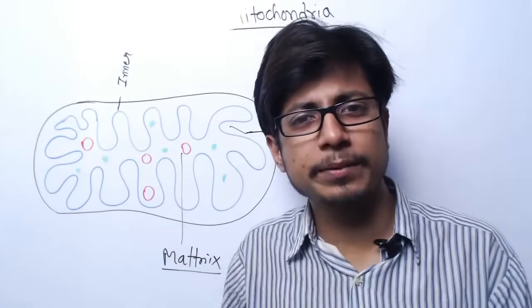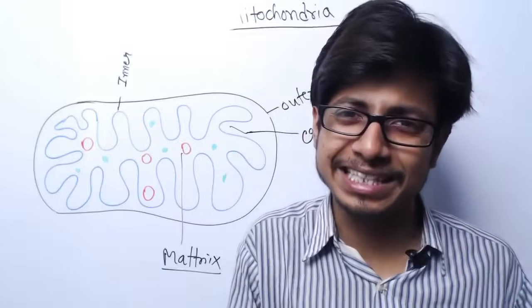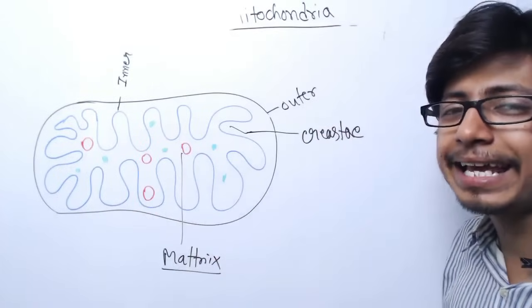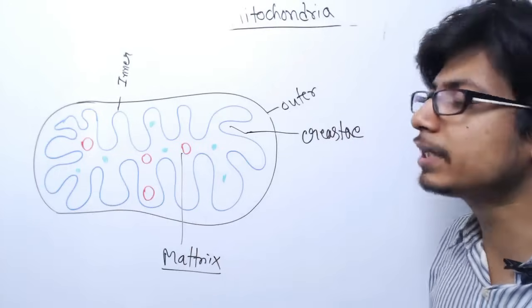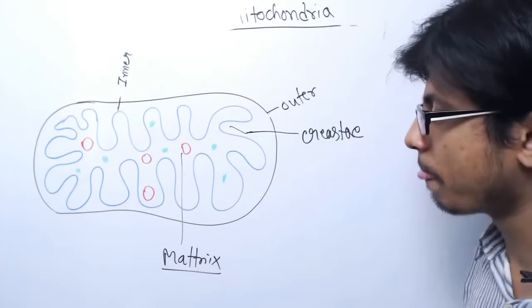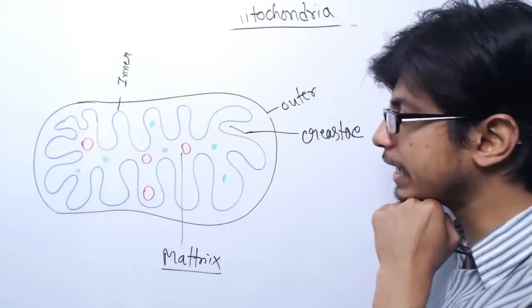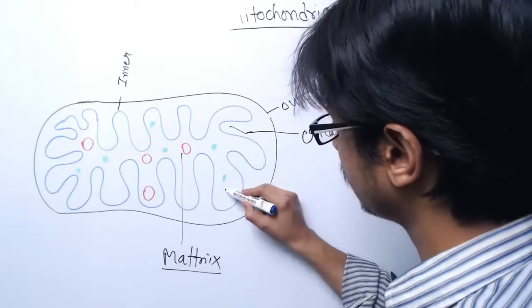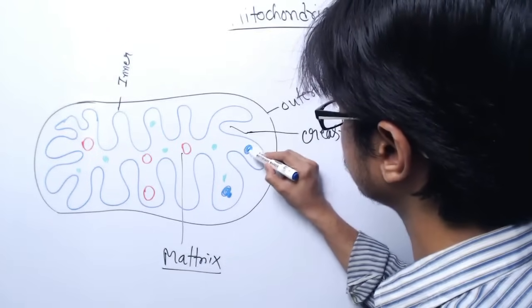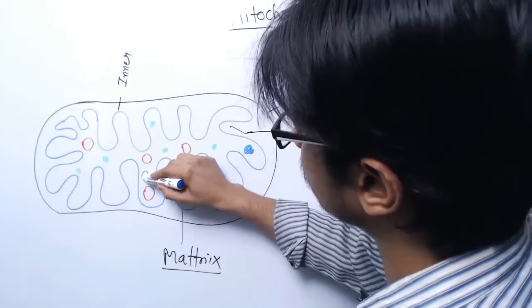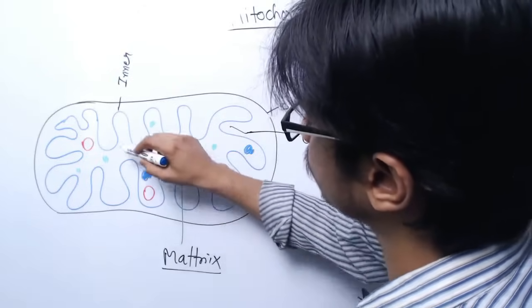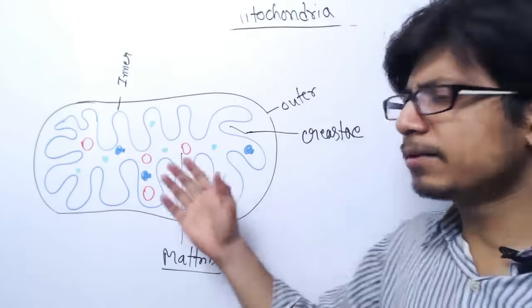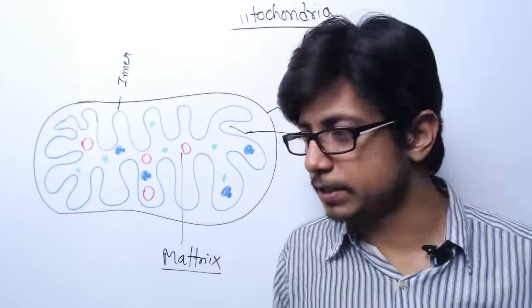This mitochondrial DNA contains specific mitochondrial-based codons and mitochondrial genes, and the inheritance pattern of this mitochondrial DNA is maternal inheritance type. Mitochondria also carries ribosomes — mitochondrial ribosomes — along with more proteins and enzymes that are present in the matrix.